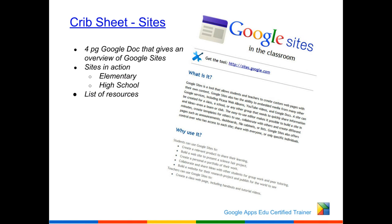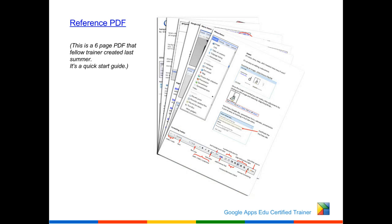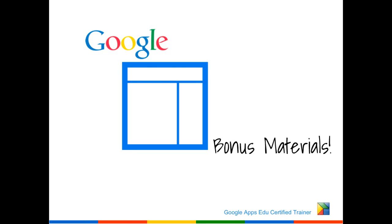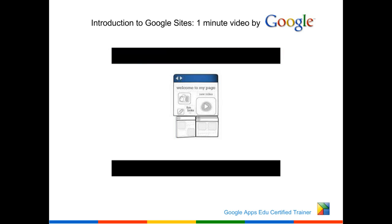Crib sheets, snippets, cliff notes — whatever you want to call them. You can get little snippets of how do I do this, how do I do that. There are reference documents and a portfolio template site that's created that you can go get a copy of if you want to, plus some little videos for doing different types of things with your Google Sites.